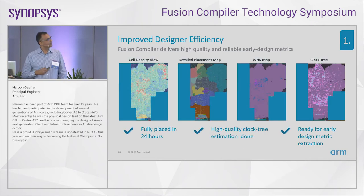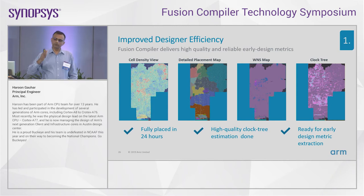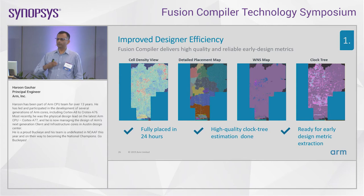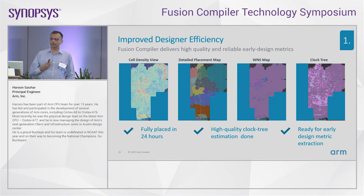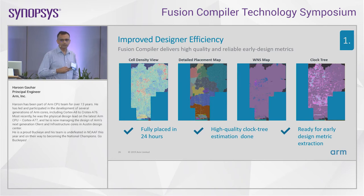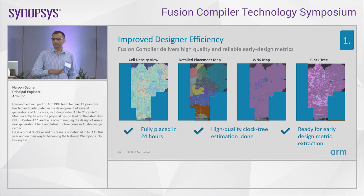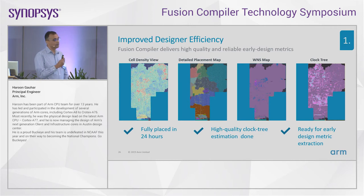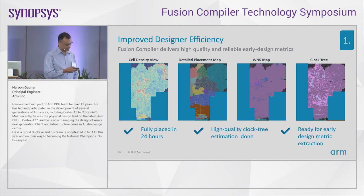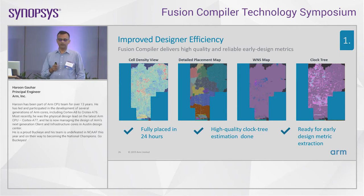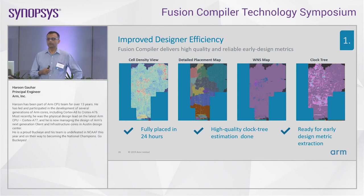Here are some of the metrics we pull out. We pull out a lot of data for our RTL designers, and within the physical design space we also look at these metrics quite a bit. We look at the cell density map, the detailed placement map. The WNS map is very critical — it basically tells you where the tool is spending most of the time, where our critical paths are. And the most important one out of Fusion Compiler is the early clock tree map, which shows how the clock tree is built and from which we can get a lot of heuristics.